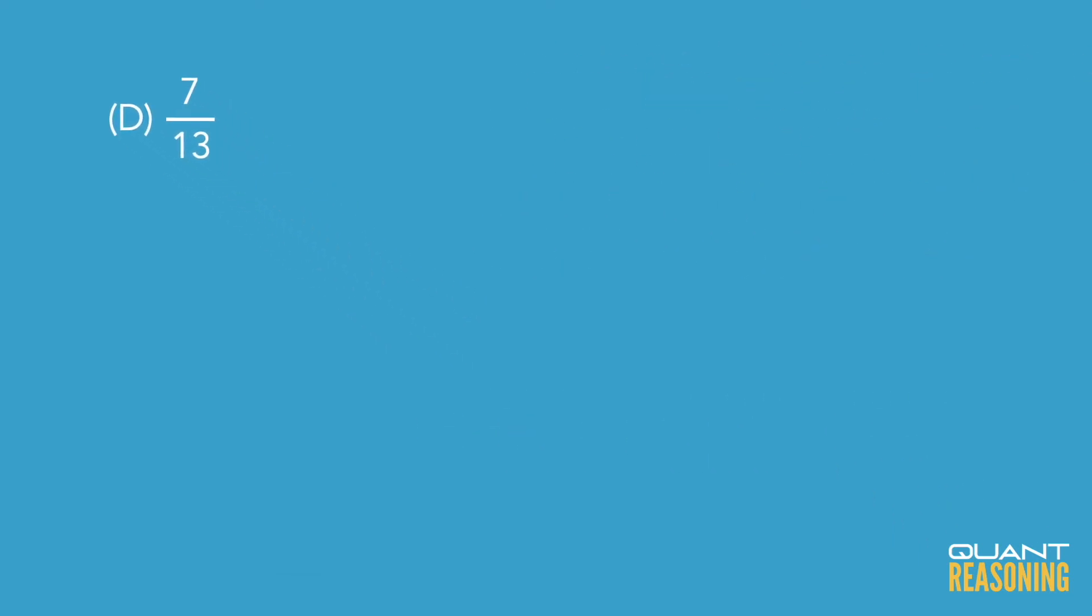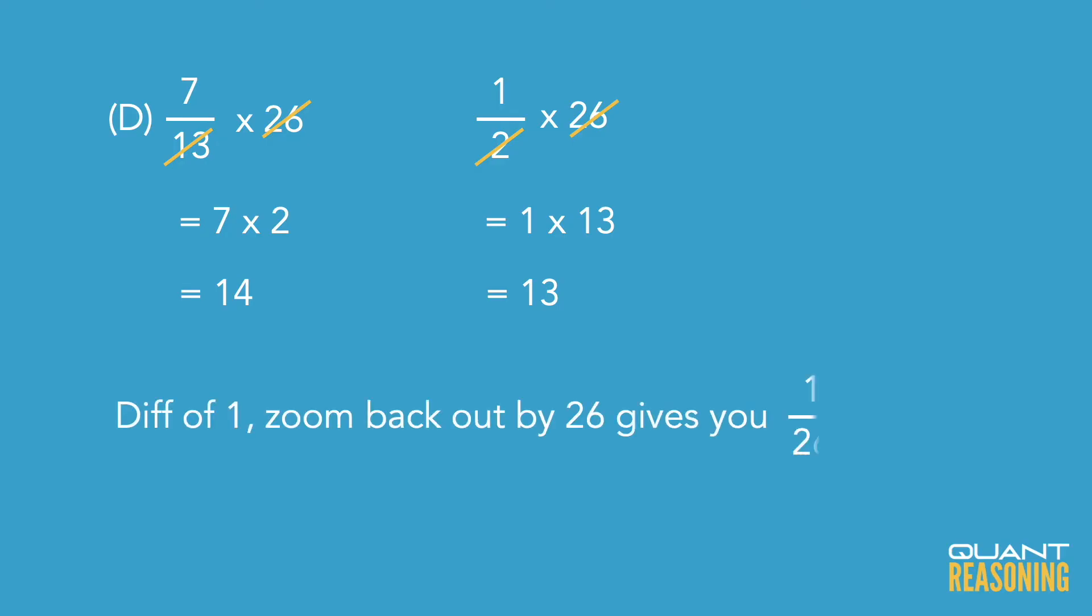Moving on to D, we're comparing one half to seven over 13. So let's zoom in by a factor of 26. Half of 26 is 13. Seven over 13 out of 26 is 14. So 13, 14, again a difference of one. This time our zoom factor was 26.